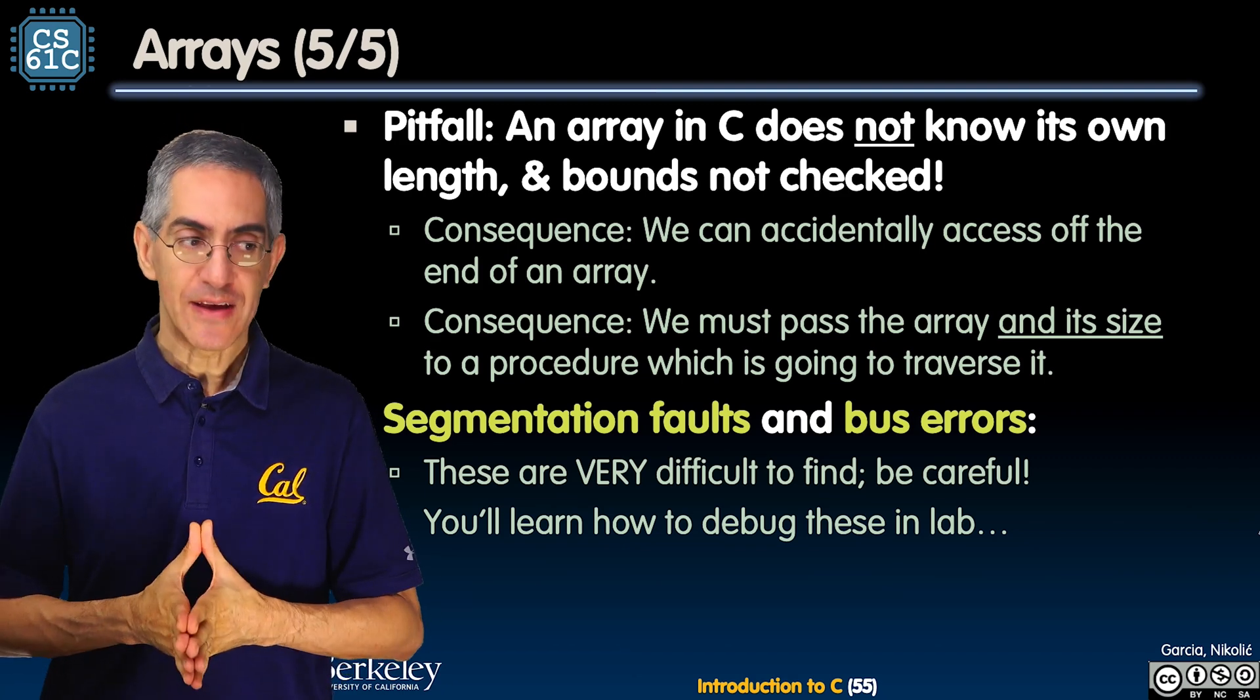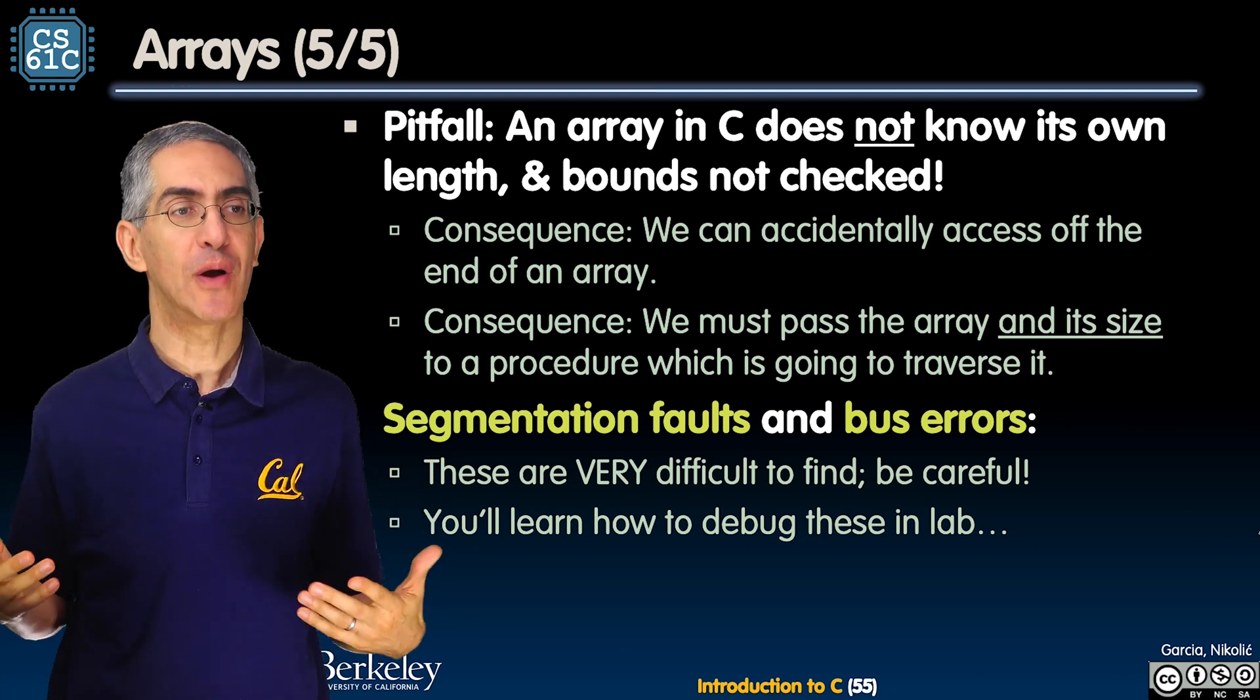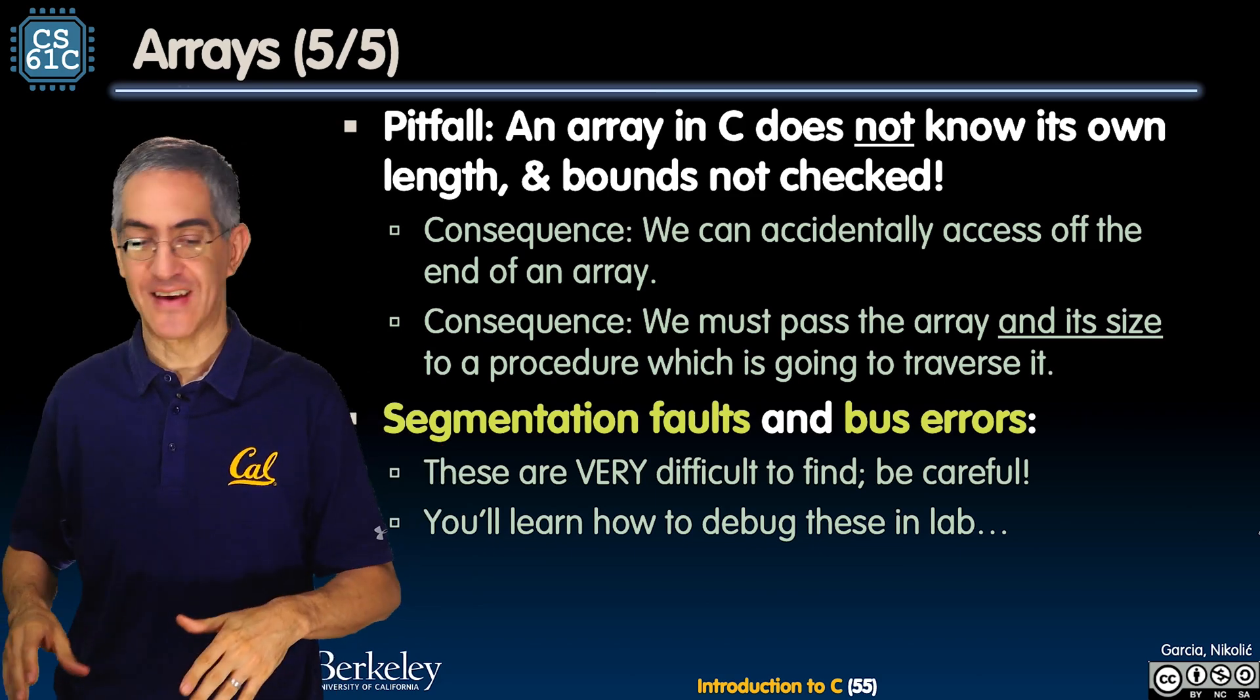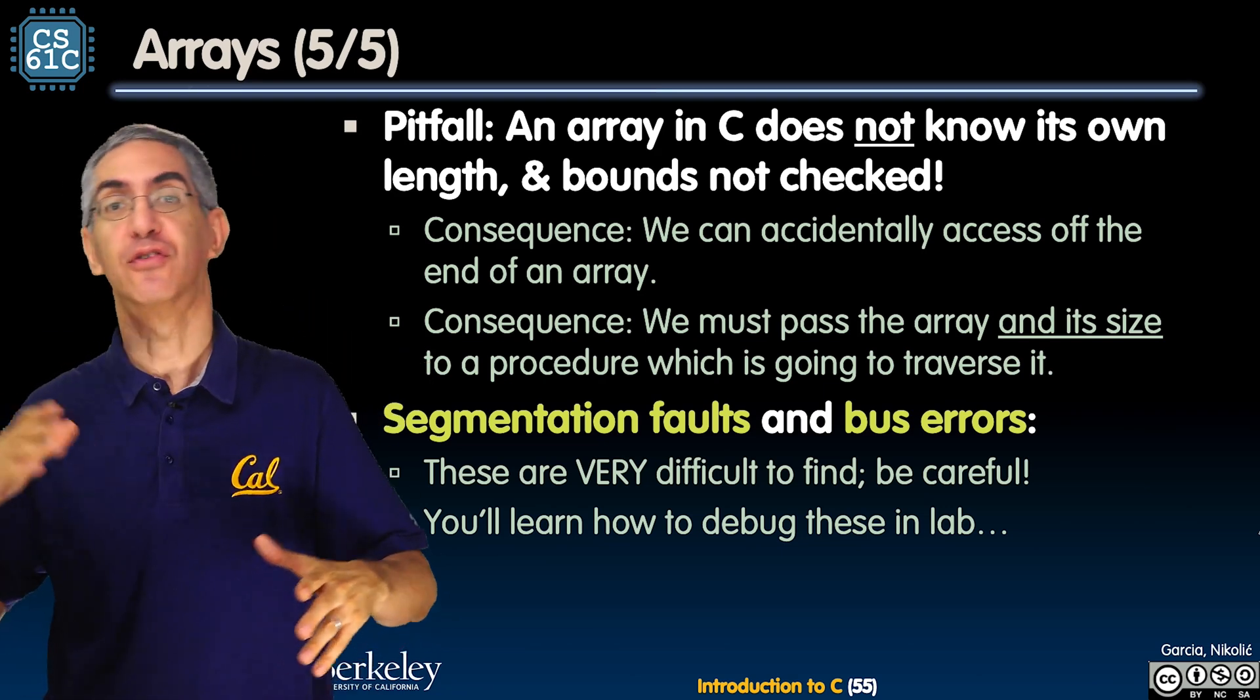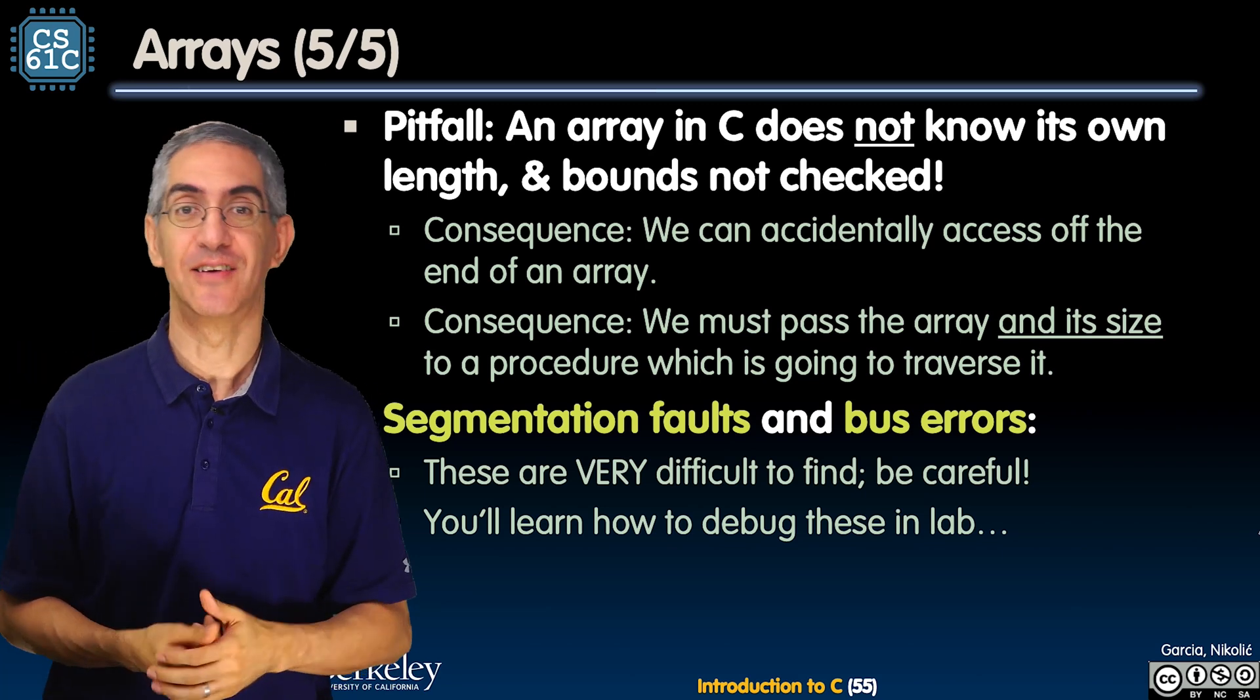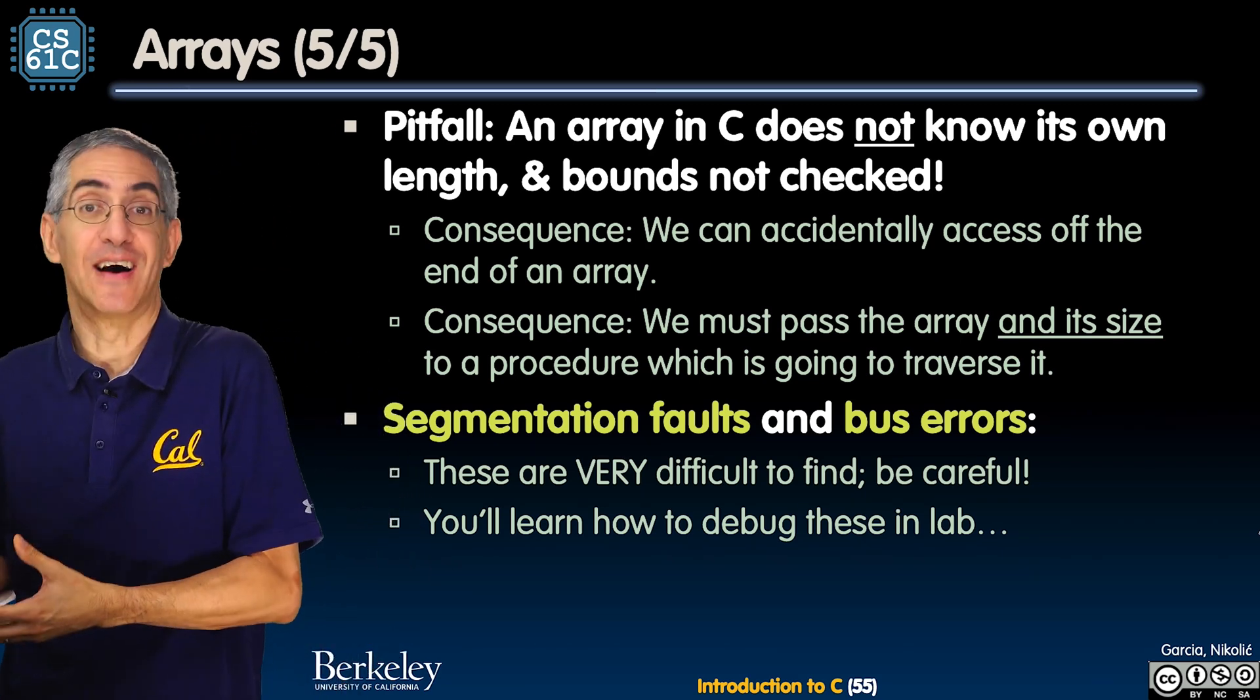Here's the other thing: arrays don't know when their bounds are being exceeded. This is C. If there's ever a question of whether C checks something, the answer is always no. C doesn't do any of those checks. C says I'm just gonna let you run as fast as you want because I'm gonna compile it down to raw machine code. I'm not gonna do those checks for you, those sanity checks to make sure you're between zero and n minus one.